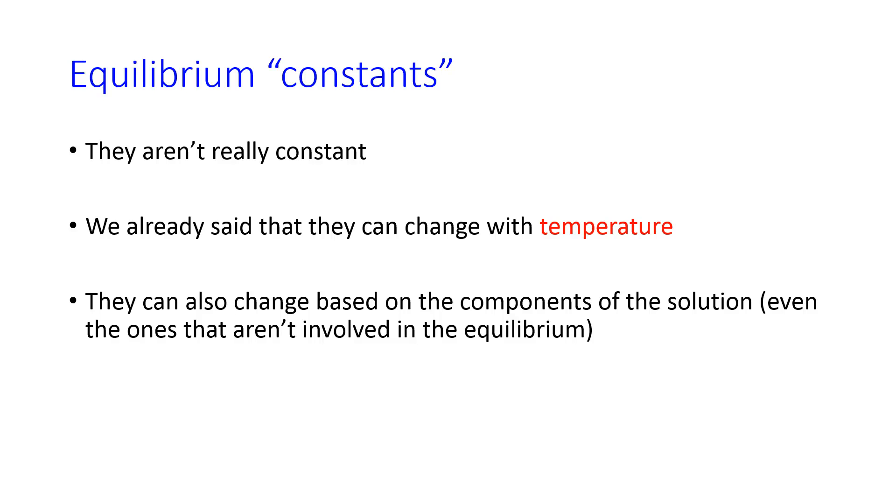For example, adding excess chloride to a solution of mercuric chloride, and seeing how the solubility changed. It turns out that this solubility change can happen even if you add an ion that is not involved in the equilibrium, so to that same equilibrium adding, say, potassium fluoride.